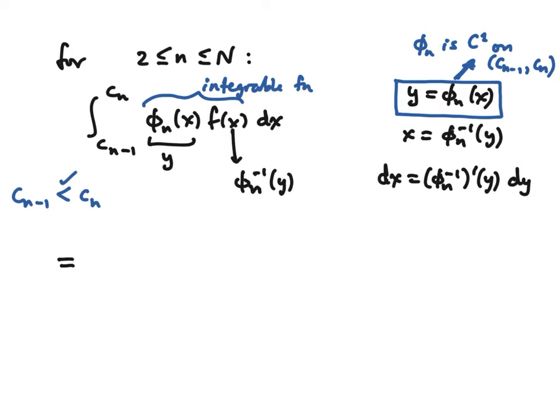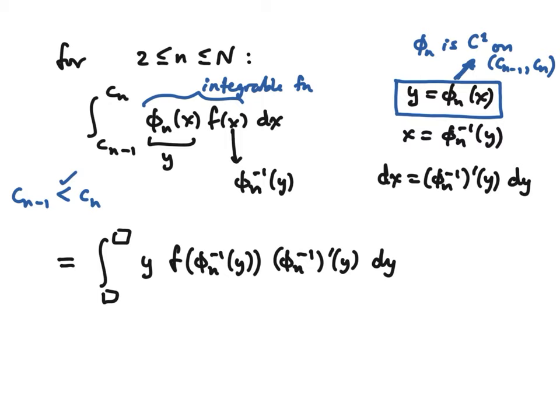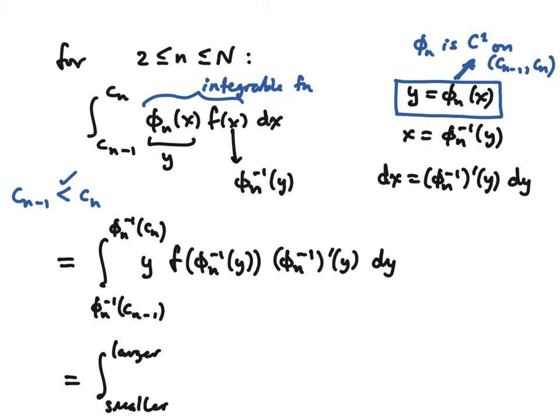What do we get? We have y and f of φ_n inverse of y, and dx becomes φ_n inverse prime of y times dy. The issue is the limits of integration — those have to change too. They change into φ_n inverse of c_{n-1} and φ_n inverse of c_n. But the problem is we don't know which of those two is smaller. We can fix things because there are just two cases: φ_n is either a green piece (strictly increasing) or a red piece (strictly decreasing).